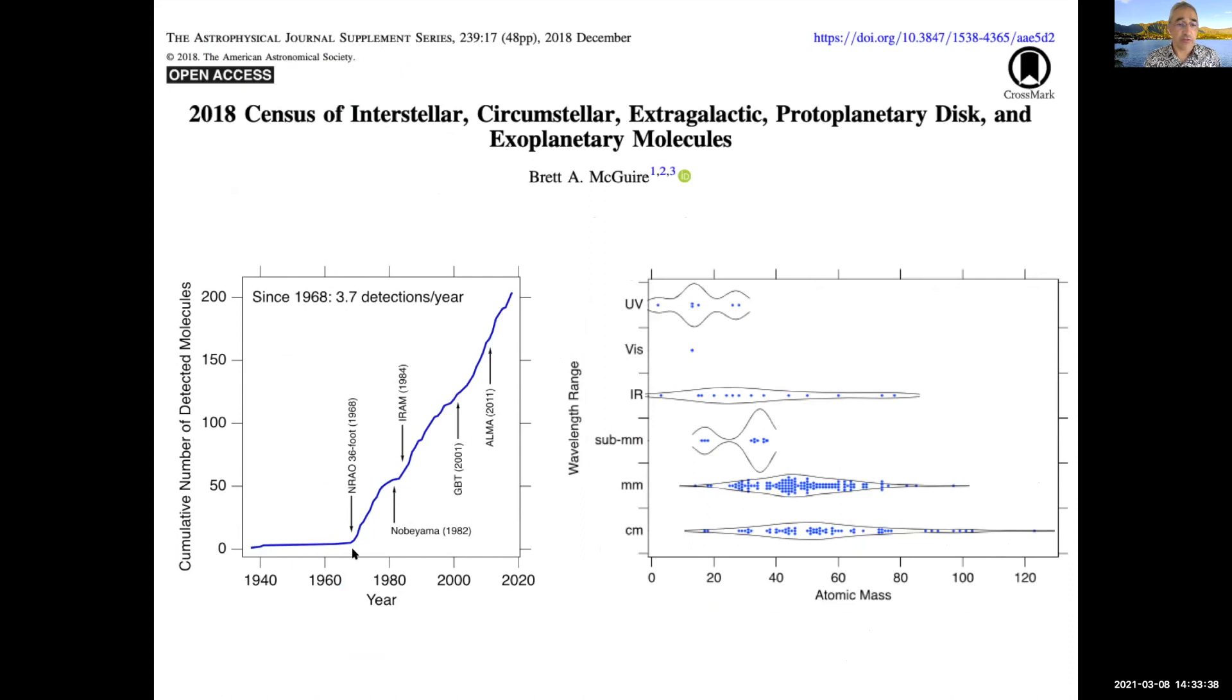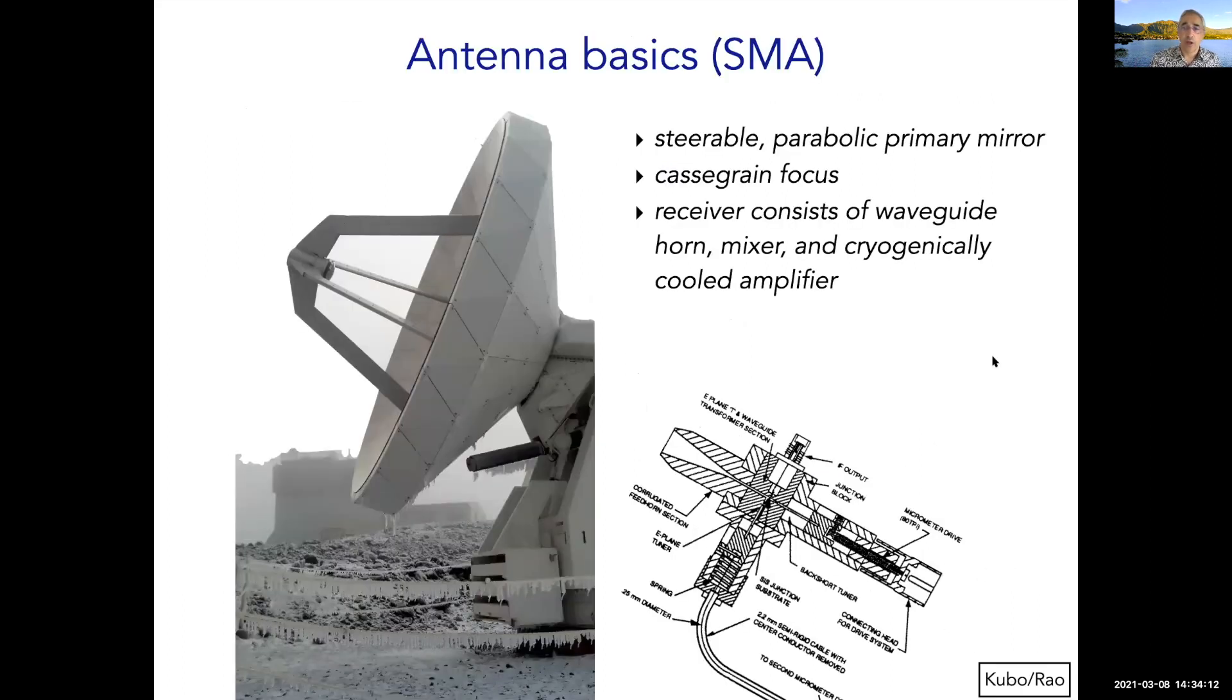Here's an SMA spectrum of Orion-KL, a very molecular-rich region. The millimeter regime can be extremely line-rich, with the density of lines in the most rich regions making it very hard to even see the continuum. There's a nice paper by Brett McGuire in 2018 showing the status of molecule detections. It's been steadily rising since the detection of CO in 1970, at a fairly constant rate, almost four a year, as new instruments have come online. Most detections of new molecules are in the millimeter regime.